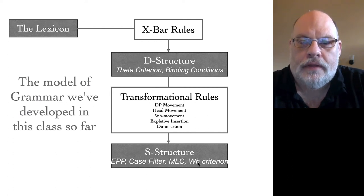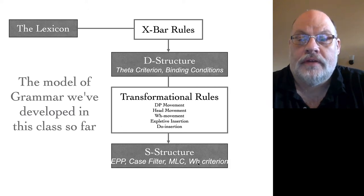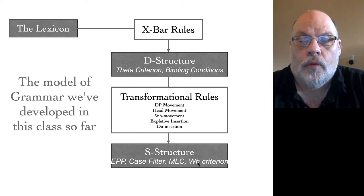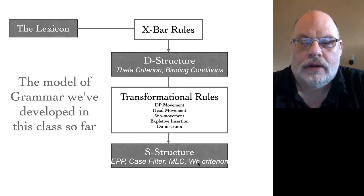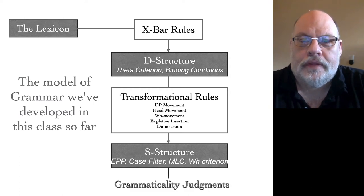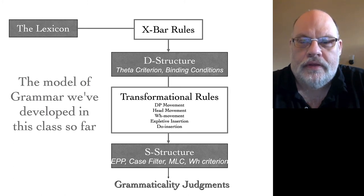These constraints hold on the S-structure, which is the result of these transformational rules. So when you take X-bar rules, transformational rules, D-structures and S-structures, and all those constraints, that is the computational component. When you've done this, it gives you your grammaticality judgments. Be very careful — this is not a model of language production. This is a model of language knowledge.